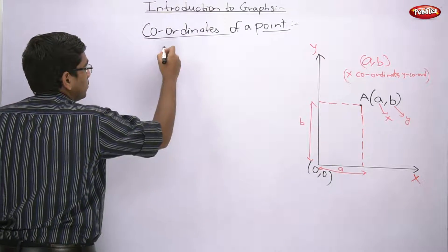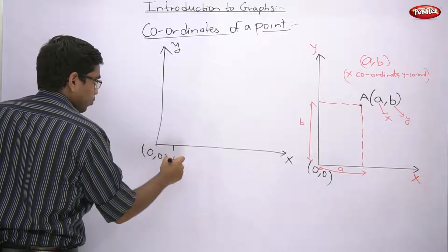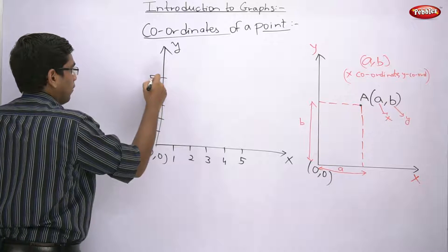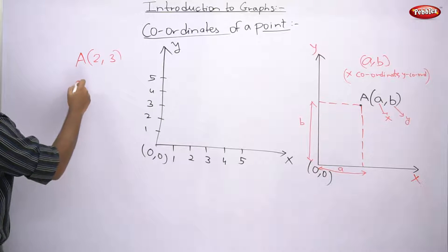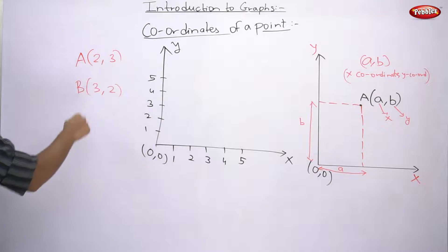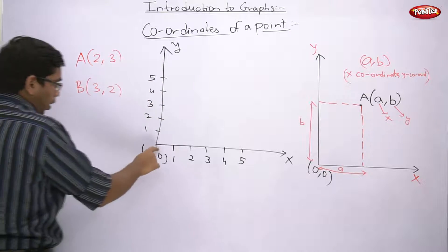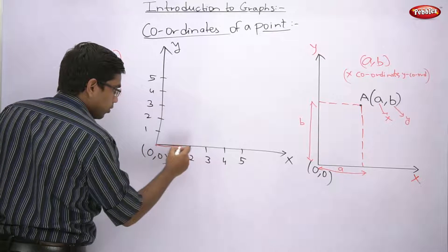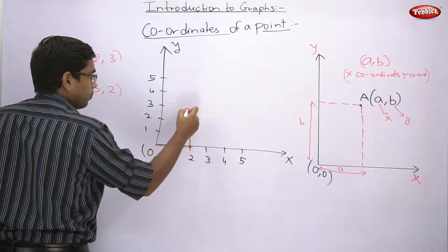For example, let us set up the axes. This is origin (0,0). Let us mark 1, 2, 3, 4, 5 on both axes. Now understand: plot point A(2,3) and B(3,2). Note that (2,3) is not equal to (3,2) — they are different points. For A(2,3), the point should be such that its horizontal distance from origin is 2 and vertical distance is 3. From the origin, go 2 horizontally, stop there, then go 3 vertically — 1, 2, 3 — and you get point A.